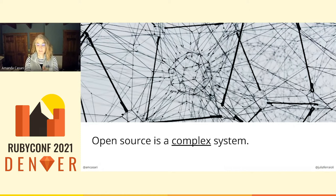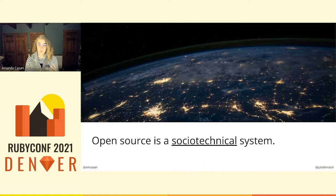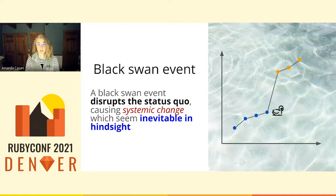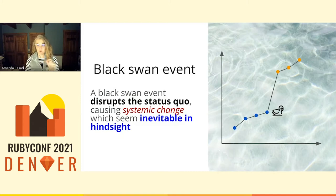We can also say that if we want to understand open source and how it changes, we have to assume that open source is a socio-technical system. The human interactions and social components cannot be separated from the technical systems themselves. This consideration is most important when disruptions happen, especially those which fundamentally change the ecosystem. Sometimes a disruption to an ecosystem may be what we call a black swan event. There are three critical components: black swan events disrupt the status quo, cause systemic change, and seem inevitable in hindsight. We'd like to use this framework to identify three specific events in the history of open source.